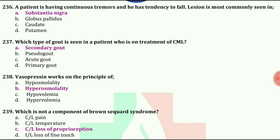Which type of gout is seen in a patient who is on treatment of CML? Answer is secondary gout.